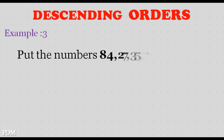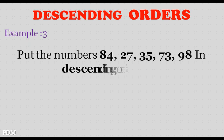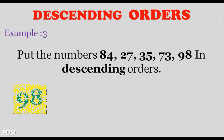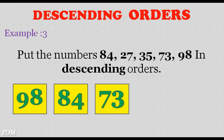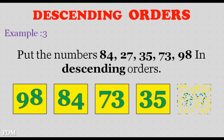Example 3: Put the numbers 84, 27, 35, 73, 98 in descending order. 98, 84, 73, 35, 27.